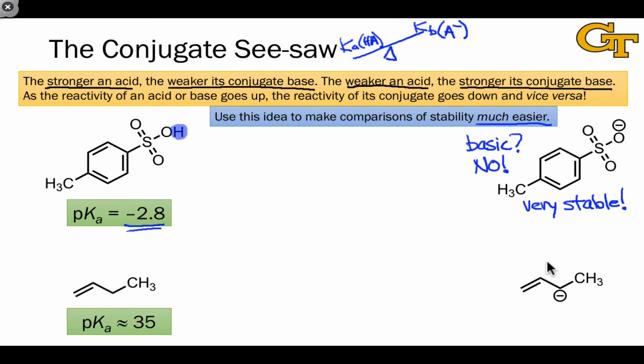Say we wanted to compare the stability of this anion to the stability of this anion above, and we were given the information that the pKa of the conjugate acid of that species, which has a hydrogen here where there's a lone pair and a negative charge in the conjugate base, is something like 35. Well, this proton is clearly much less acidic than the acidic proton up here, as evidenced by the difference in pKa values.